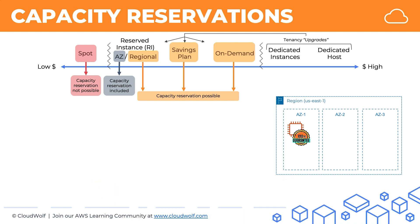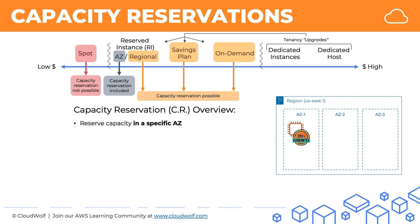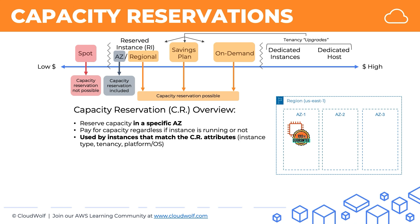Here's a quick overview. Capacity reservation has to be done in a specific availability zone. You pay for the capacity regardless of whether the instance is running or not. The capacity will be used by instances that match the capacity reservation attributes: the instance type, the tenancy, and the platform or operating system.